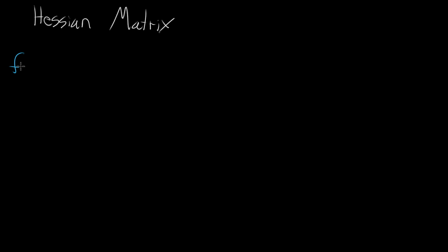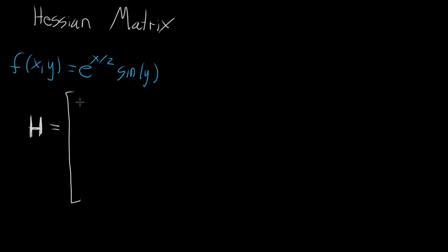So let's say you have some kind of multivariable function, like the example we had in the last video: e to the x halves multiplied by sine of y. The Hessian matrix, often denoted with a bold-faced H, is a matrix that contains all the second partial derivatives of f.